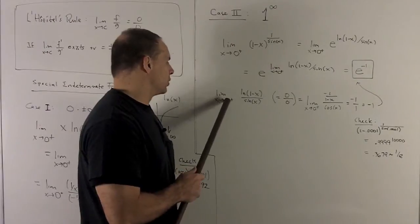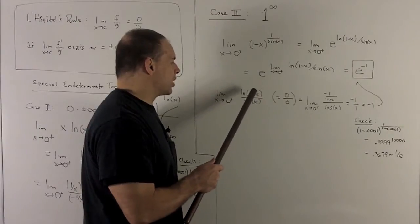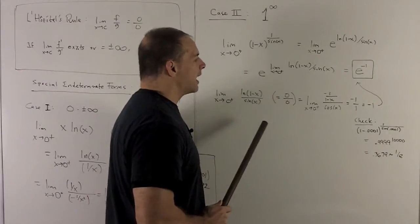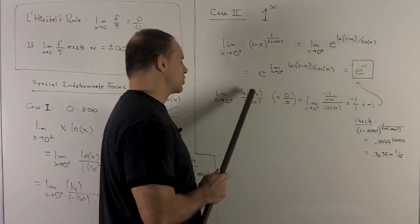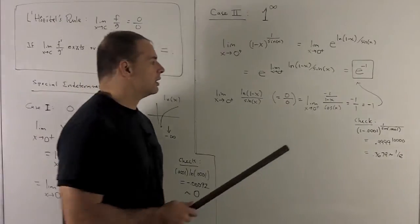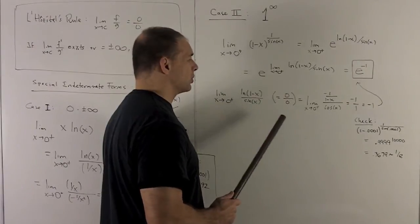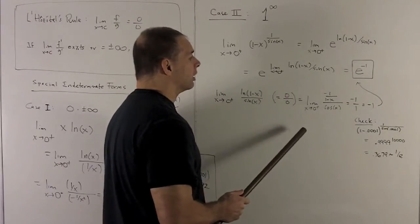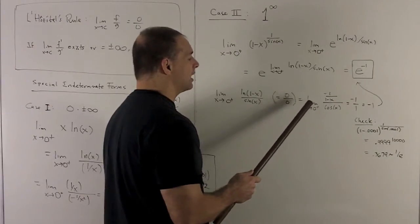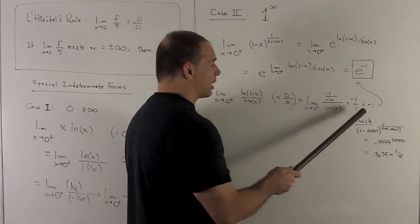We compute the limit as x goes to 0 from the right of ln(1 minus x) over sin(x). Putting zeros in: natural log of 1 is 0, sin(0) is 0 — so L'Hôpital's rule applies. Taking the derivative of the top: flip and multiply by the derivative of the inside, giving minus 1 over (1 minus x). Derivative of the bottom is cosine. Putting 0 in: the top gives minus 1, the bottom gives cosine(0) which is 1. So the result is minus 1.